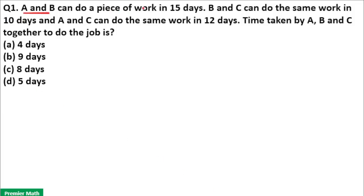A and B can do a piece of work in 15 days. B and C can do the same work in 10 days. A and C can do the same work in 12 days. Time taken by A, B and C together to do the job is.